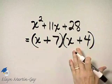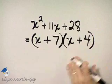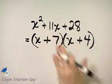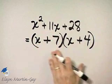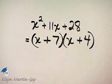Remember what factor means? It means write as a product. And I've written this trinomial as the product of x plus 7 and x plus 4.